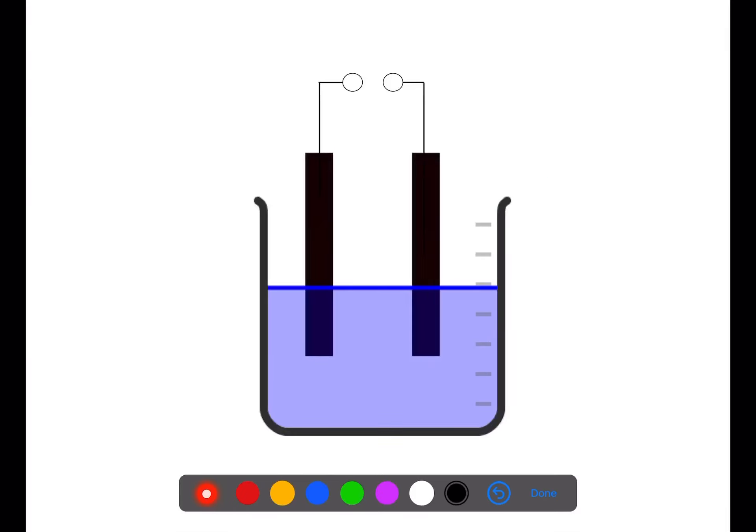Let's look at an example to explain how this works. In the beaker we have copper chloride solution. This means that within the solution we have copper 2 plus ions and we have chloride 1 minus ions. We have positive and negatively charged electrodes.